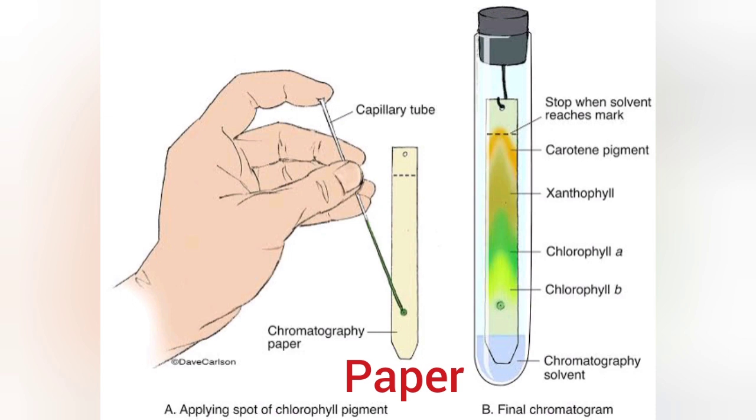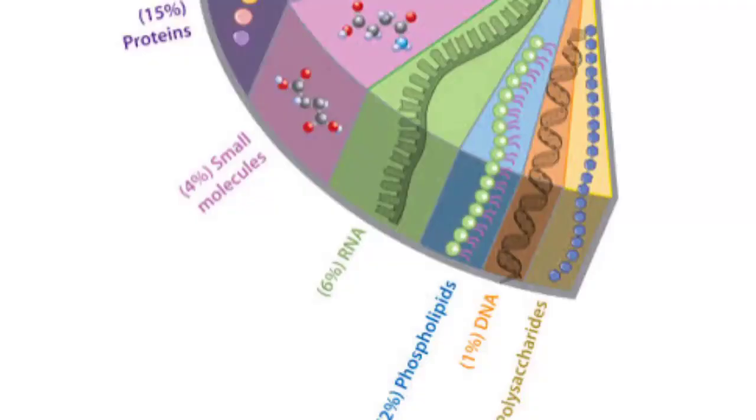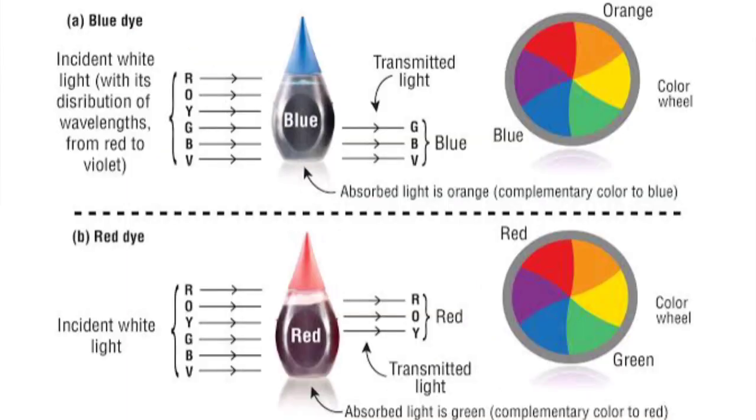Our main aim is to separate all the components present in the sample which we are going to analyze. In samples, many components are present. For example, if we take a dye, there are many different colors, so we have to isolate and separate all those components of that sample.